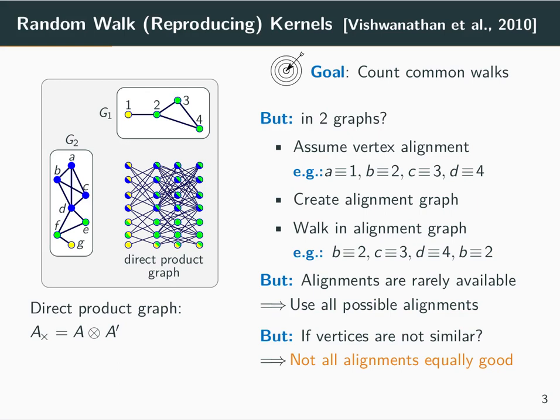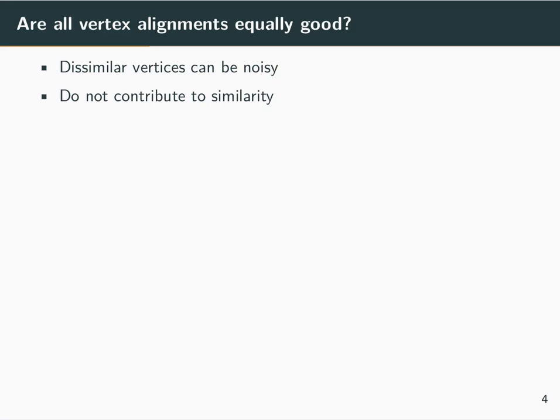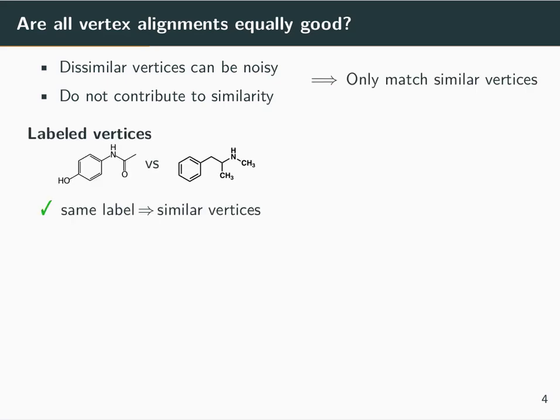And we can now ask if all of these alignments are equally good. We are starting from the premise that dissimilar vertices can be noisy or they do not contribute to similarity, and therefore we seek to match only the similar vertices of a graph.